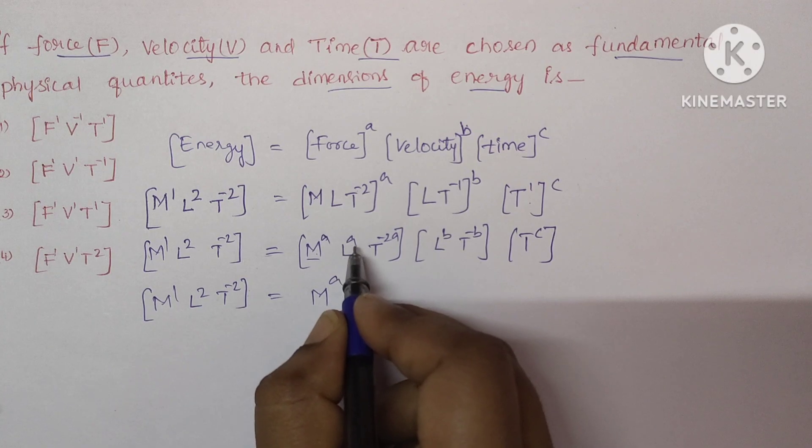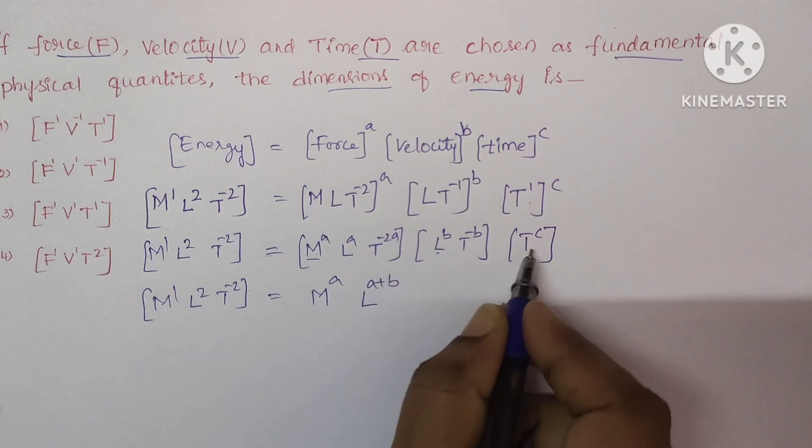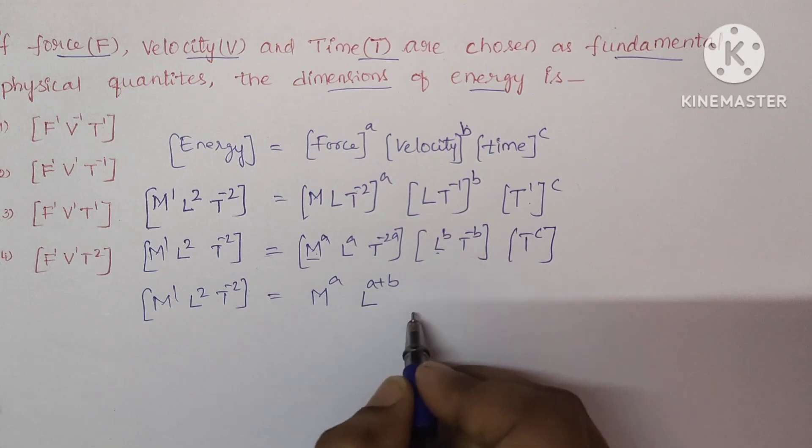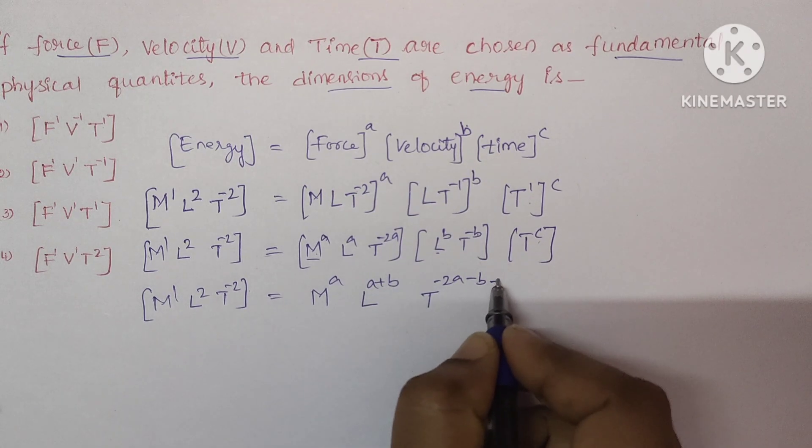Next, write it for length term. So this is A, here it is B, that's it. Next, T. So T power here it is minus 2A, here it is minus B and here it is C.